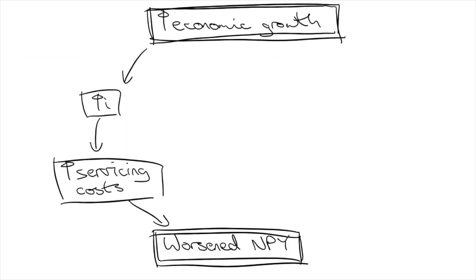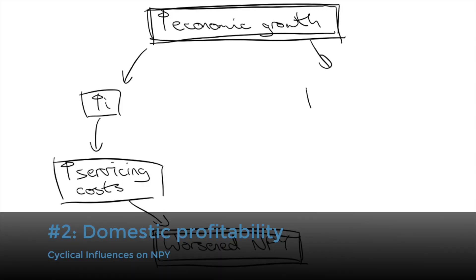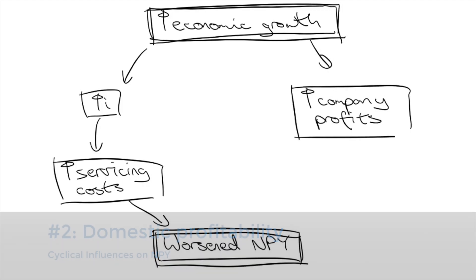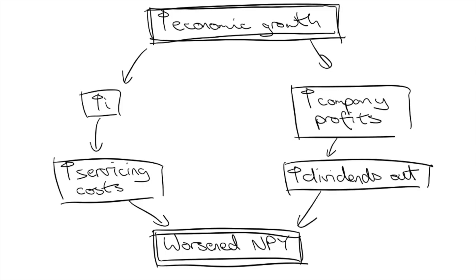Another reason that there is a correlation between strong economic growth and a worsened NPY deficit is that when GDP growth is high, company profits are high. Approximately 40% of Australian shares are held overseas. So that means 40% of dividends issued from Australia will end up overseas. These dividend outflows contribute to the NPY deficit.